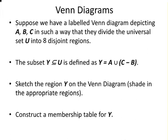So the subset Y, which is a subset of U, is defined as follows: Y is the union of A and C minus B. So the regions that are in C only are in C, but not in B.